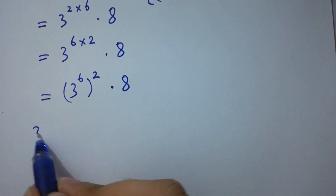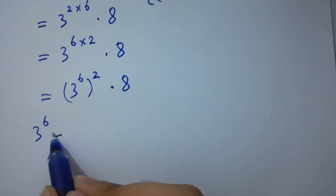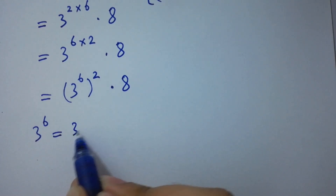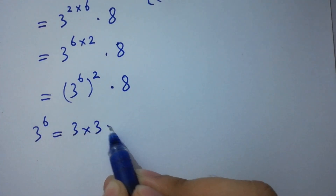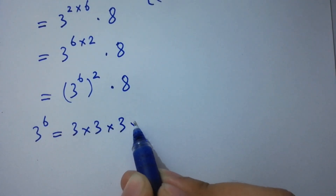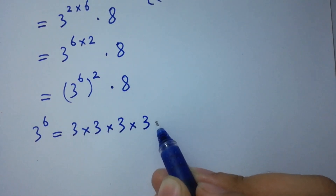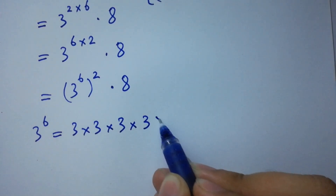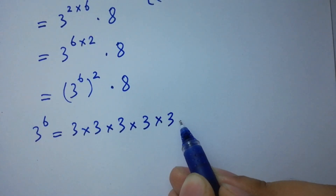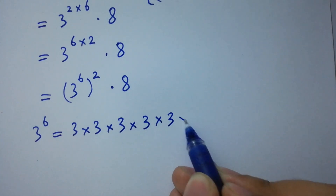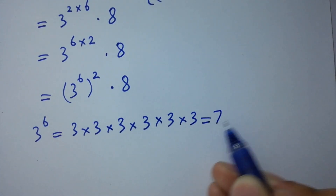So we need 3 to the power 6. Computing: 3 times 3 is 9, times 3 is 27, times 3 is 81, times 3 is 243, and 243 times 3 is 729.